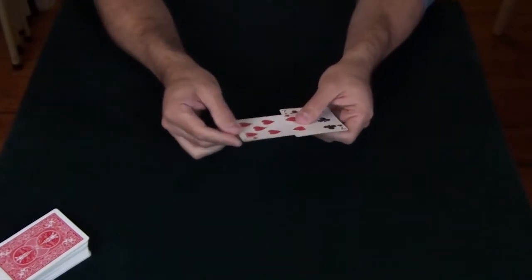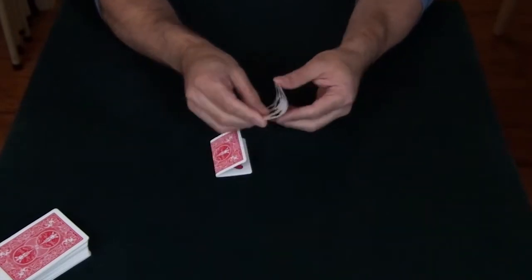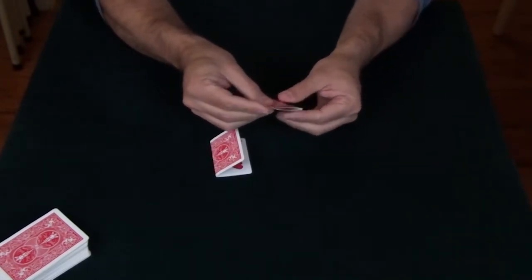The seven of hearts is going to act as our time machine and the seven of clubs is going to act as our time traveler.